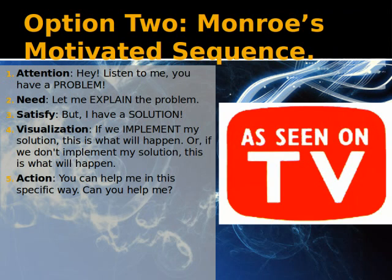To sum up Monroe's Motivated Sequence really fast, there is: attention, need, satisfaction, visualization, and action.